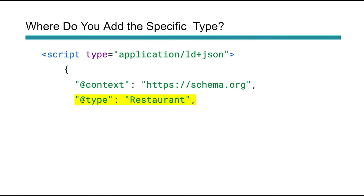So where do we add this specific type? In the original example it had @type set to local business. What you would do is simply replace that with your specific subtype. So in this case, if you're a restaurant, you would have a subtype of restaurant. By tagging schema.org, Google would know that you're a local business and that your subtype — your more specific type — is a restaurant.